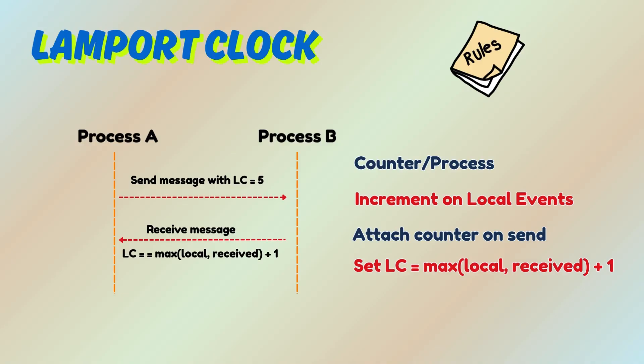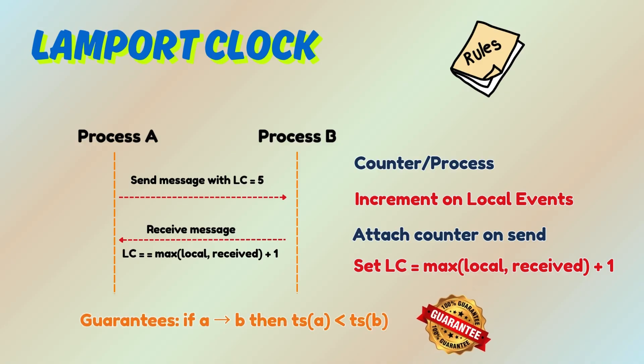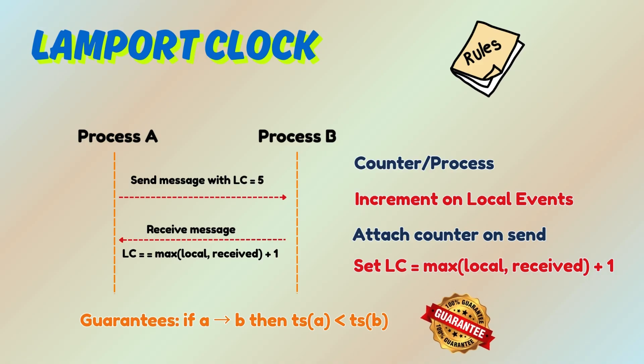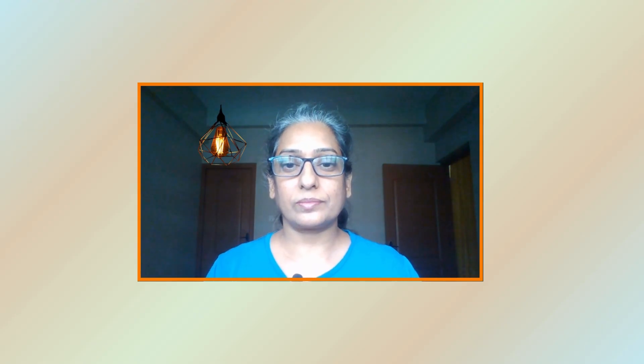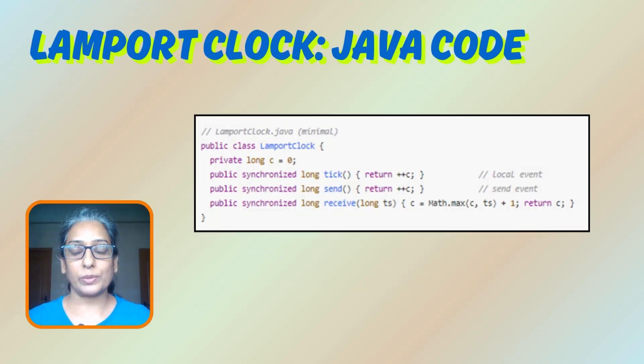This guarantees that if A happened before B, then the timestamp of A will be less than the timestamp of B. It does not detect concurrency — only ordering. Vector clocks are used when you must detect concurrency. Here is a sample Java code implementation for logical clocks.